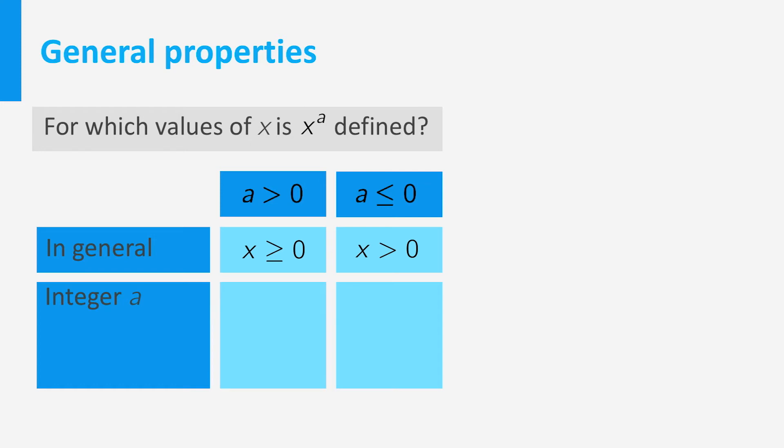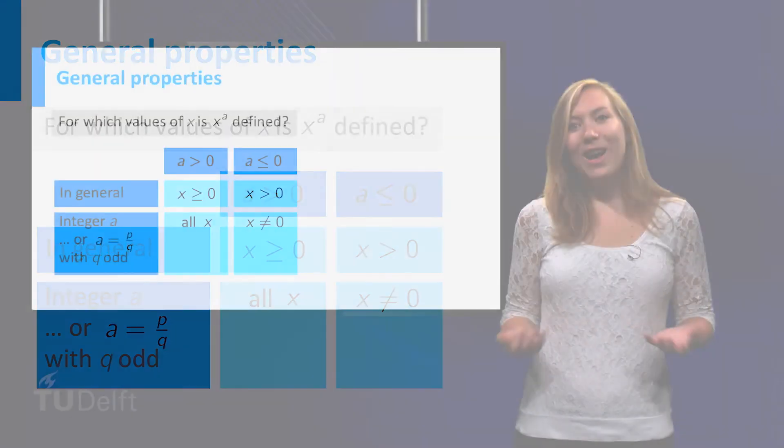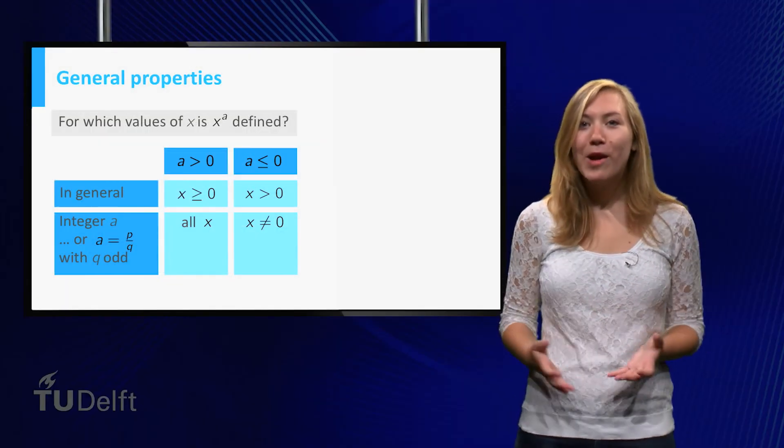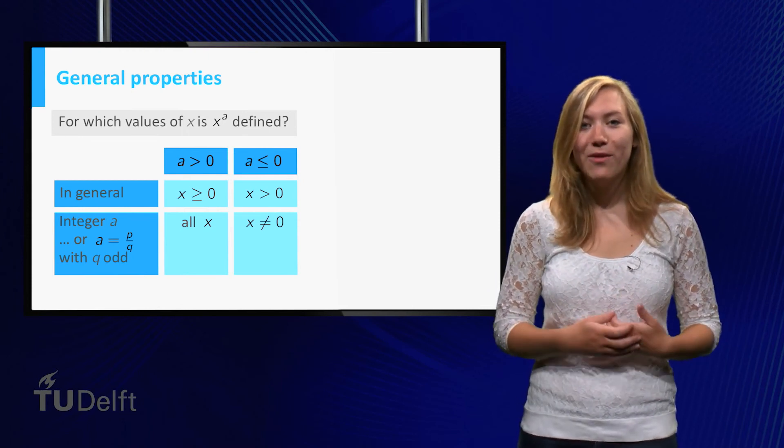If a happens to be integer and positive, then x to the power a is defined for all x. If a is smaller than or equal to 0, then again we exclude x equal to 0. There are some non-integer exponents for which this holds as well. To be precise, if a equals p divided by q, where p and q are integers, and q is odd. I will be honest, you will probably rarely have to deal with such exponents for negative x.